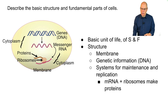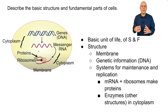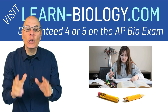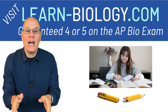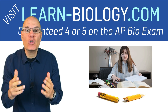The ribosome translates messenger RNA into proteins. Proteins are the workhorse of the cell. One of the most important types are enzymes, which control the cell's metabolism. Other proteins may be embedded in the cell's membrane, and others might even be exported from the cell.